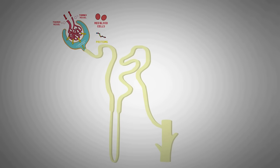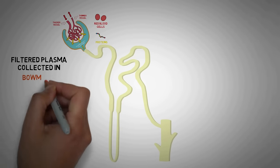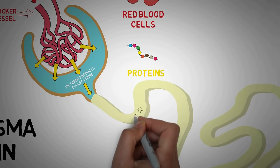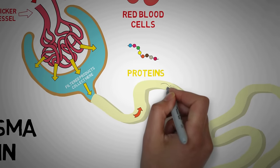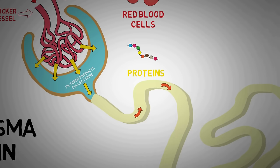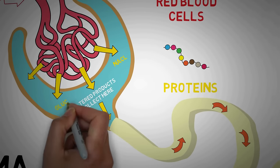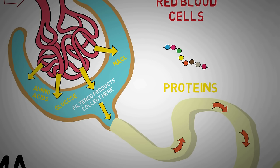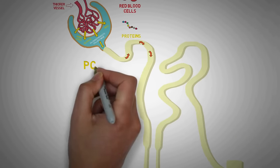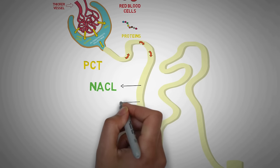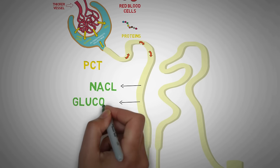The plasma filtered into the Bowman's space is known as the glomerular filtrate, which then moves into the renal tubule for further processing to form urine. This is very important because the initial glomerular filtrate contains many things that shouldn't be excreted, like sodium chloride, glucose, amino acids, and excess water. In the proximal convoluted tubule, approximately two-thirds of filtered salts and water, and almost all glucose and amino acids, are reabsorbed.